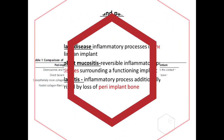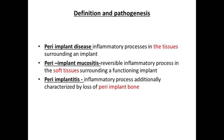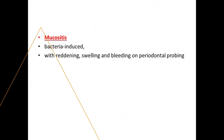Before going into the topic, we have to be very clear with the definition of each terminology. Peri-implant disease is an inflammatory process involving tissue surrounding the implant. Peri-implant mucositis is a reversible inflammatory process involving the soft tissue surrounding a functional implant, whereas peri-implantitis is an inflammatory process that in addition to soft tissue also involves loss of peri-implant bone.